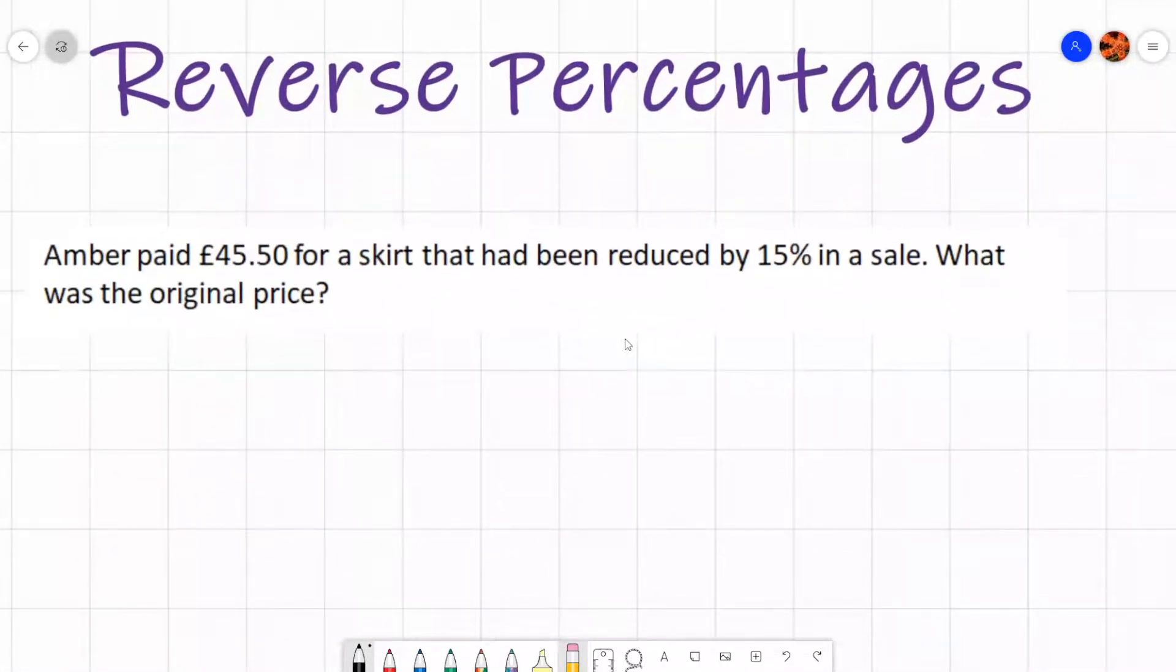This is an example of a reverse percentage question. Amber paid £45.50 for a skirt that had been reduced by 15% in a sale. What was the original price? That's why it's called a reverse percentage because you're going backwards. You're working out what was the original price or the original weight or whatever the original value was.